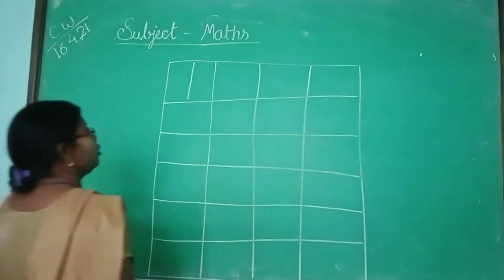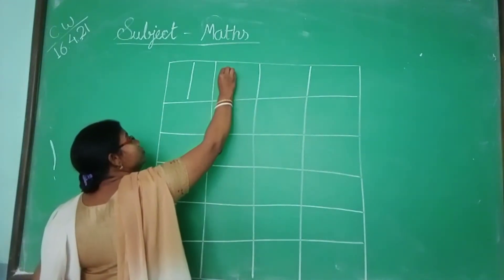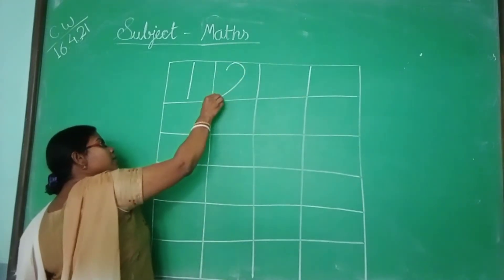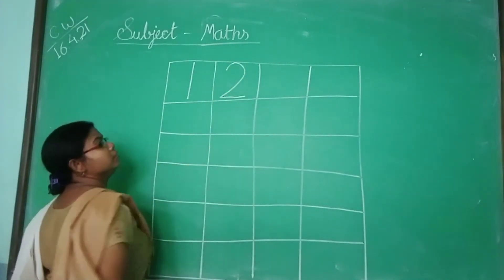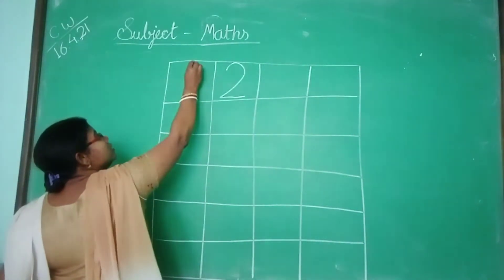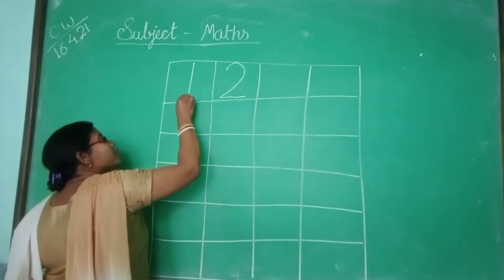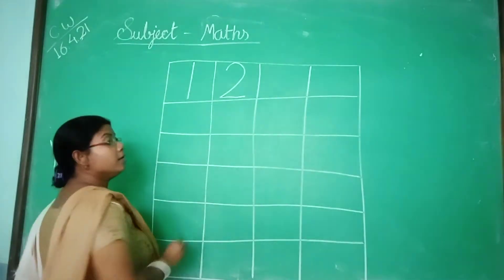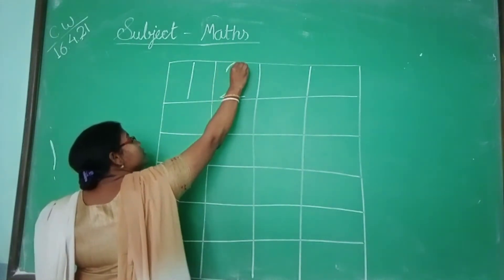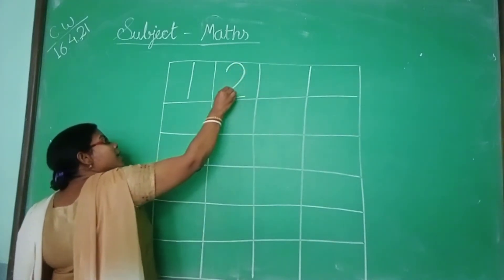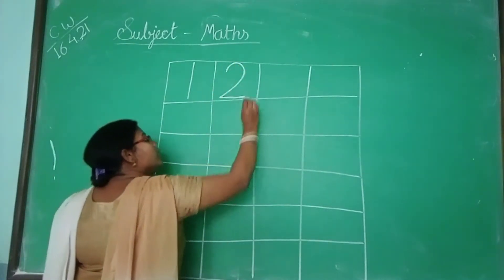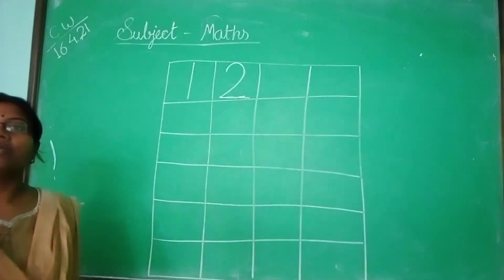Then you will write number 2. Backward curve, forward standing line, slipping line. On standing line you become number 1. Then number 2: backward curve, forward sliding line, slipping line — it becomes number 2.